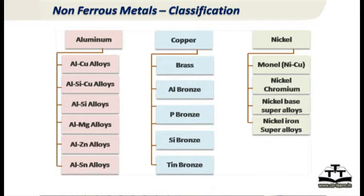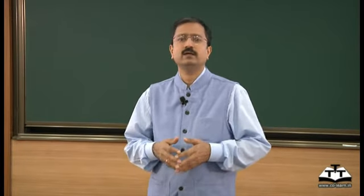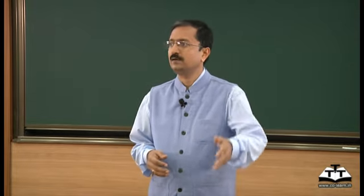Looking at non-ferrous metals classification: most non-ferrous metals are aluminum alloys, followed by copper, and then nickel, magnesium, zinc, and other alloys. Within aluminum alloys, combining aluminum with other elements gives aluminum-copper alloys, aluminum-silicon-copper alloys, or aluminum-silicon alloys — which are very popular because silicon gives higher strength than aluminum alone. Aluminum-magnesium alloys and aluminum-titanium alloys offer high strength-to-weight ratio. The number of aluminum alloys runs into the hundreds — only the major ones are listed here.